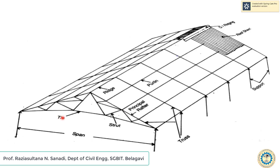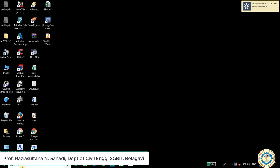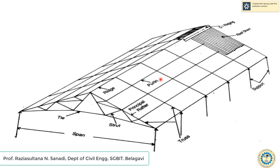Ties are tension members. Struts are compression members of the truss. Purlins are structural members which are supported on the principal rafter and which run transverse to the truss. They support the roof covering either directly or through the help of the rafters.